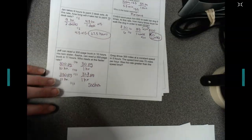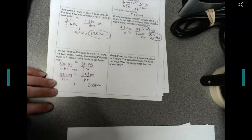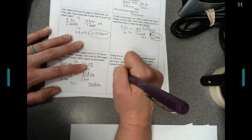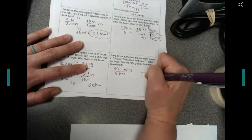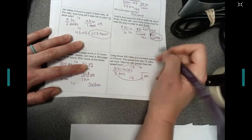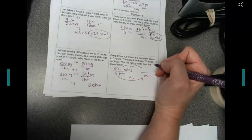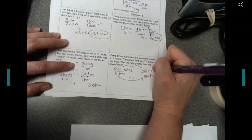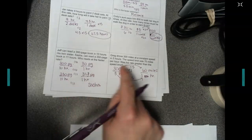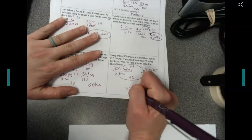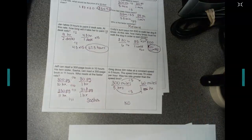And, Greg drove 300 miles at a constant speed in 5 hours. The speed limit was 70 miles per hour. Was his rate greater than the speed limit? So, I'm going to do 300 miles, 5 hours. I'm going to get a 1 on the bottom. To make a 5 into a 1, I'm going to divide by 5. Our answer on the top, 300 divided by 5, we get 60. I need to slow down. So, 60 miles per 1 hour. The speed limit was 70. Was his rate greater than the speed limit? No, it was not. He was only driving 60 miles per hour. The speed limit was 70, so he was not.